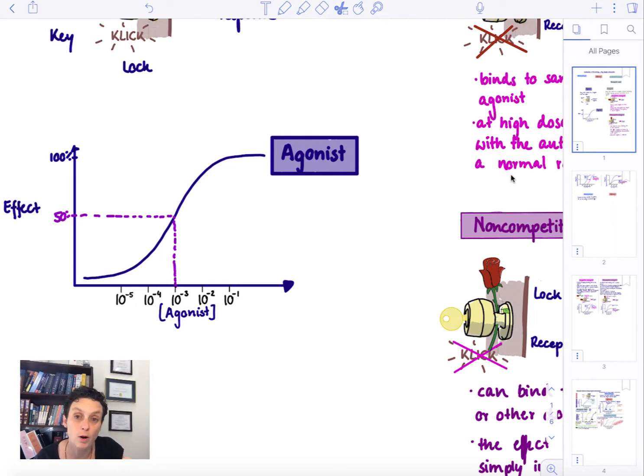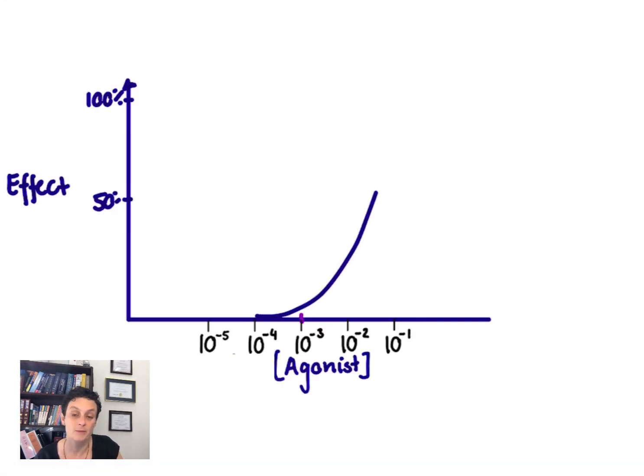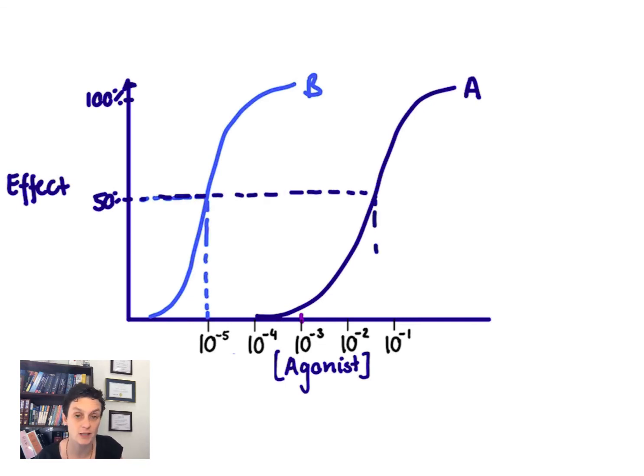And the more potent the drug is, the smaller is the concentration to get this 50%. Let's compare drug A with drug B. Which drug is more potent? Definitely drug B because you need a lower concentration to get 50% of the drug's maximal effect.